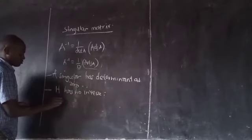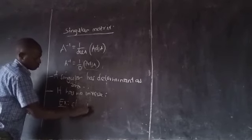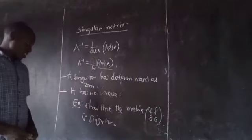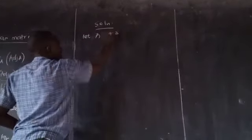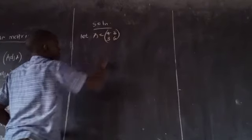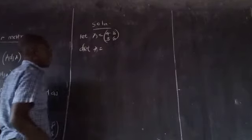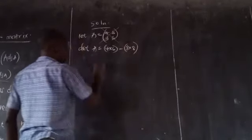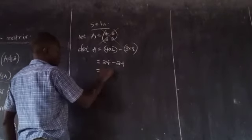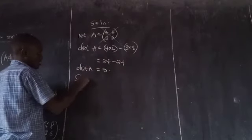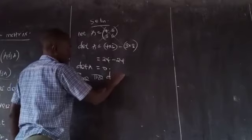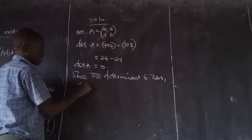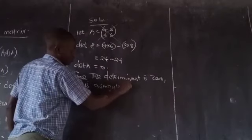It now comes as an example: Show that the matrix A equals [4, 8, 3, 6] is singular. The determinant of A equals 4 times 6 minus 3 times 8, which gives 24 minus 24, which is 0. Since the determinant is 0, it is a singular matrix.